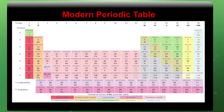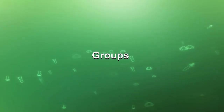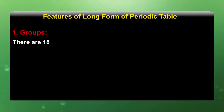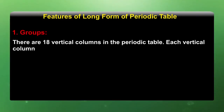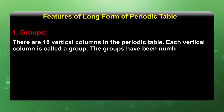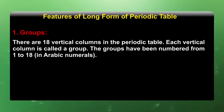This is the long form of periodic table which indicates all the elements, with a total of 7 periods and 18 groups represented here. There are 18 vertical columns in the periodic table; each vertical column is called a group. The groups have been numbered from 1 to 18 in Arabic numerals.